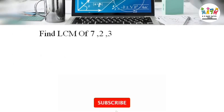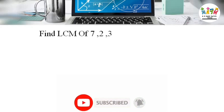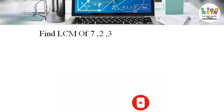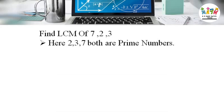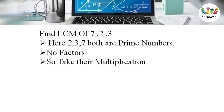Find the LCM of 7, 2, and 3. Here, all numbers are prime numbers — 2, 3, and 7 — so there are no common factors and none of them share a table. When all numbers are prime, take their multiplication. So 2 into 3 into 7 gives us 42, and the LCM is equal to 42.